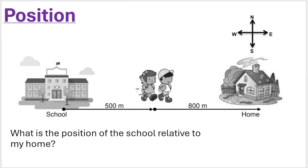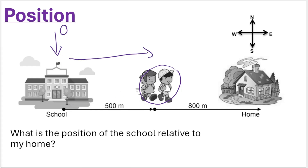What if I ask you for the positions of the boy and the girl relative to the school? You start at the school — that's your zero position, your reference point. You can see that the boy and the girl are 500 meters to the east of the school. So your answer for the position of the boy and the girl relative to the school is 500 meters east.